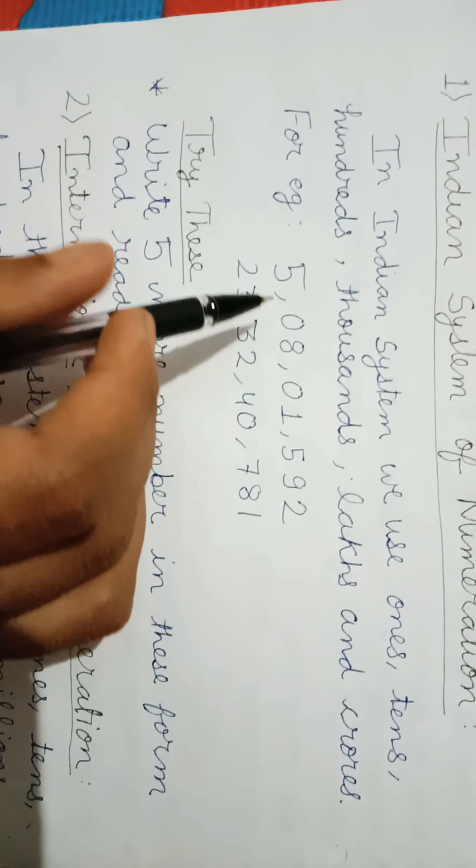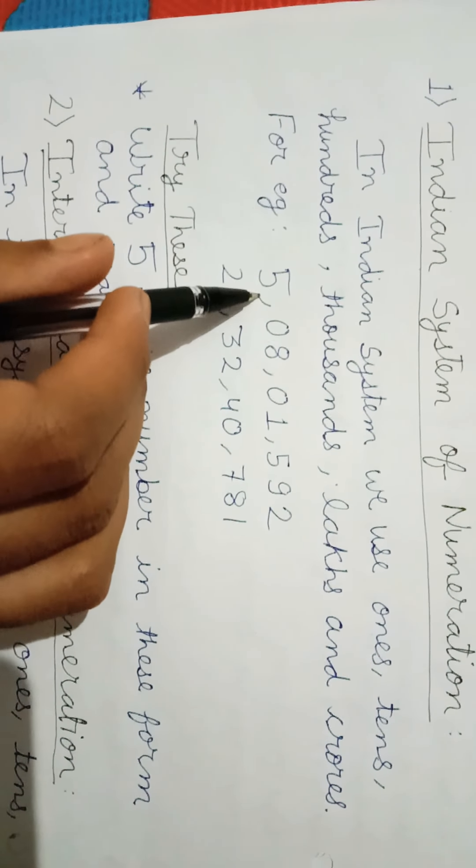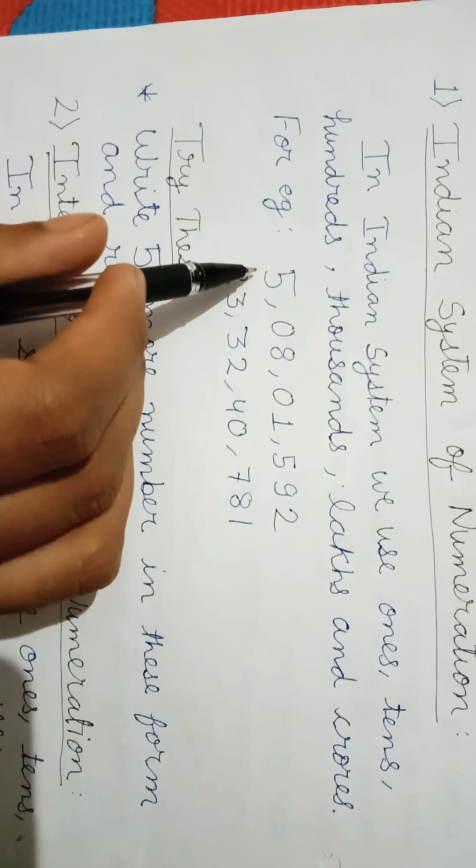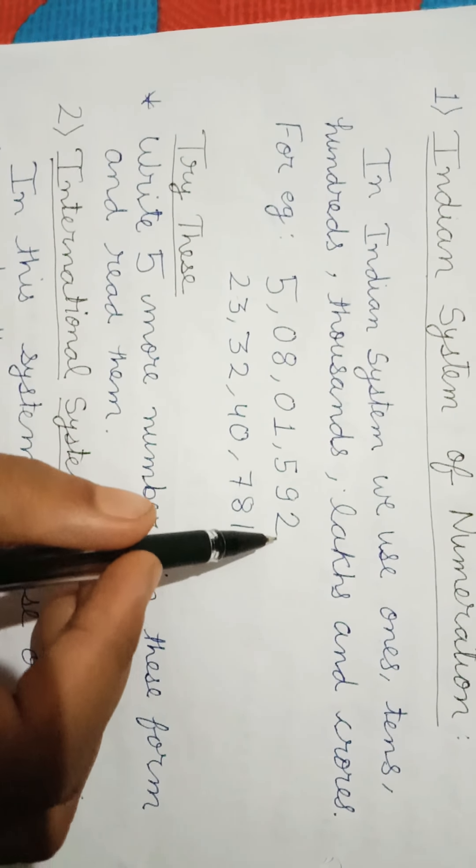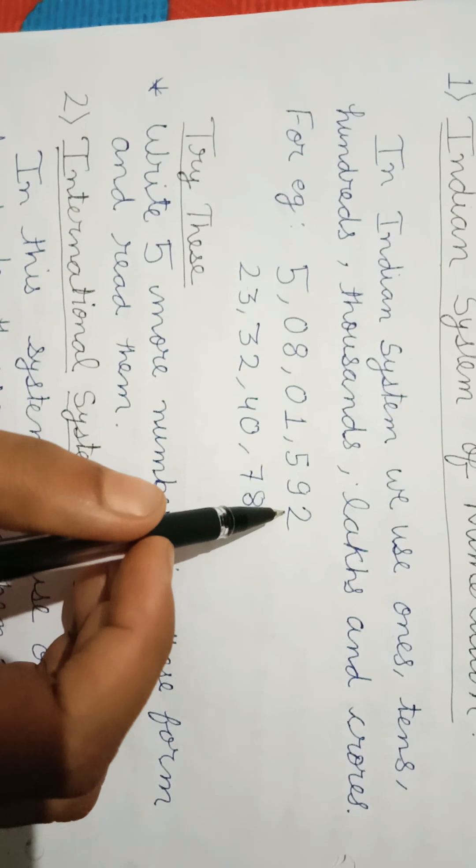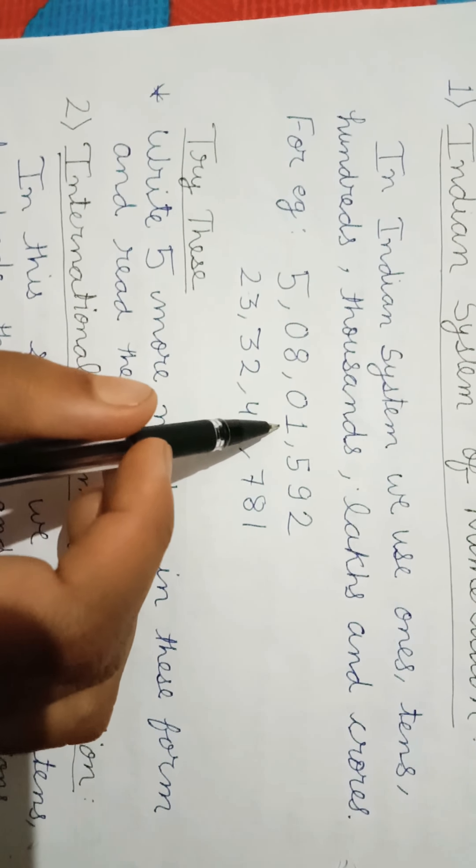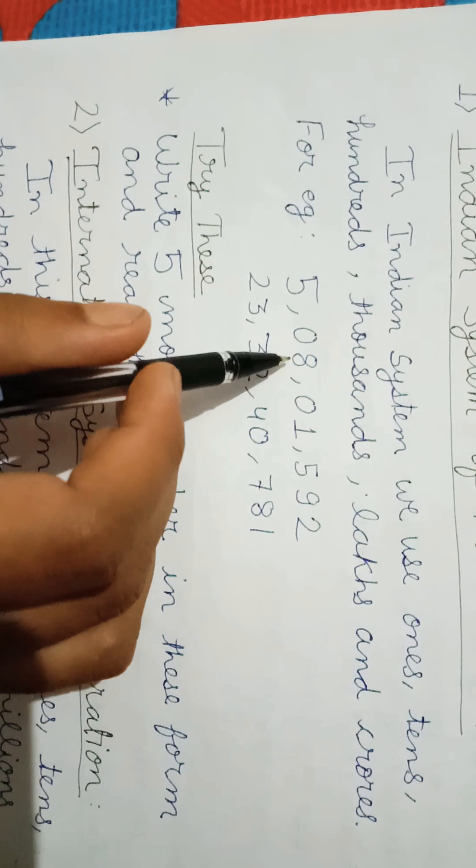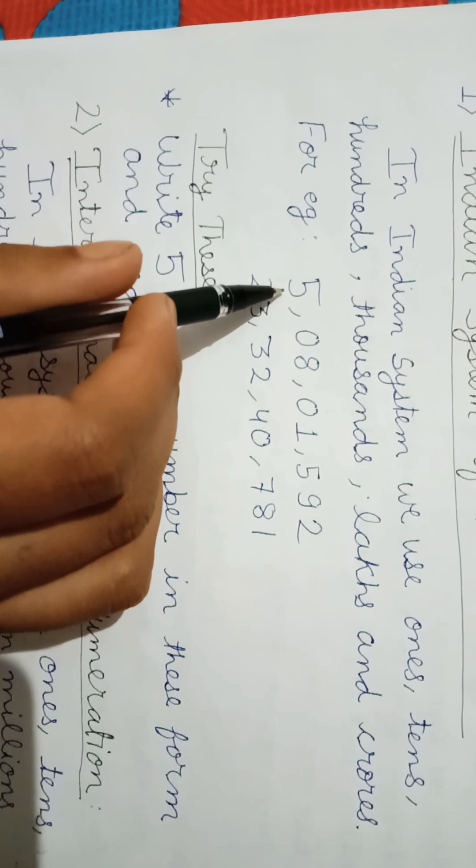Next, comma comes after five digits from the right side and marks it as lakhs. Next comma comes again after two digits and marks it as crore. It reads as ones, tens, hundred, thousand, ten thousand, lakhs, ten lakhs, crore.